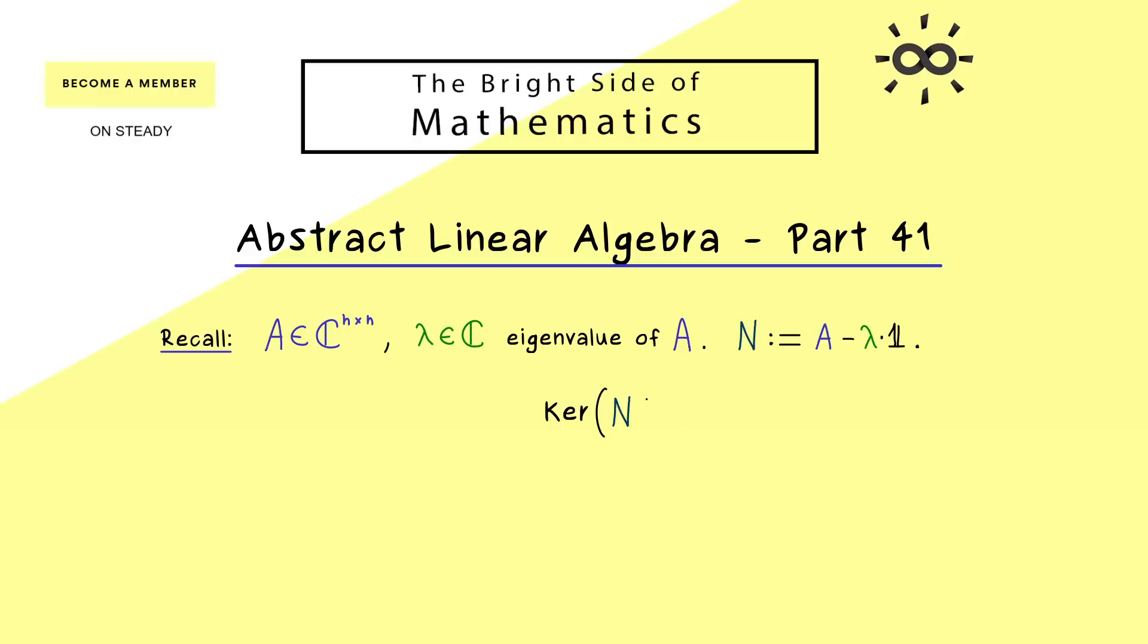Then we know that the kernel of this matrix N is non-trivial because we know we have eigenvectors corresponding to the eigenvalue. And now we have shown that we can also look at the powers of this matrix D to possibly increase the kernel.